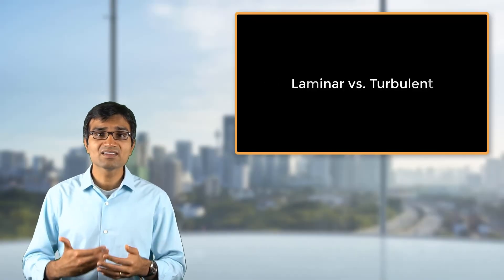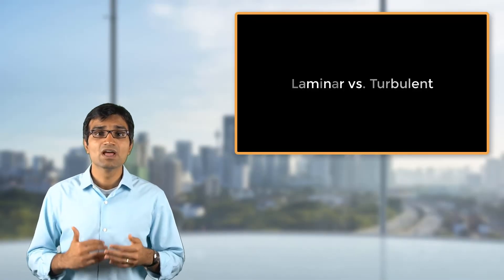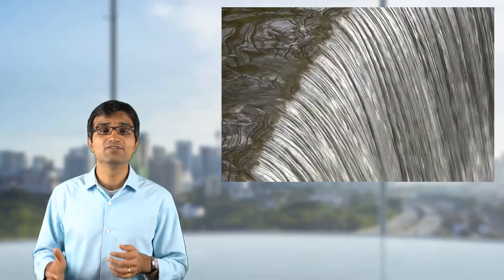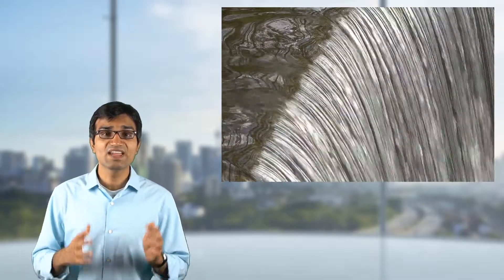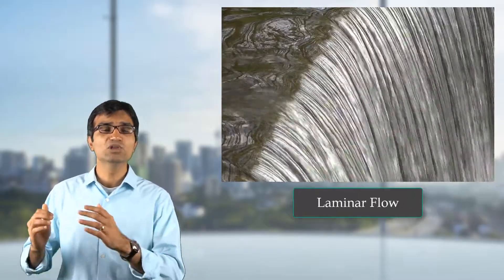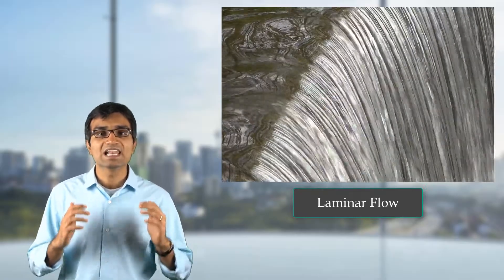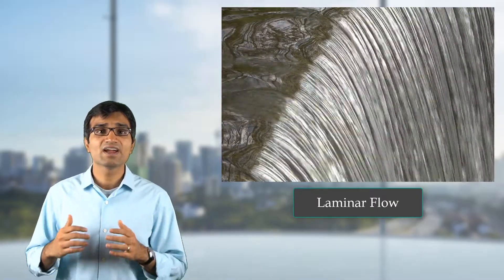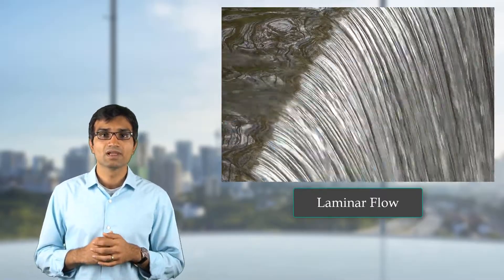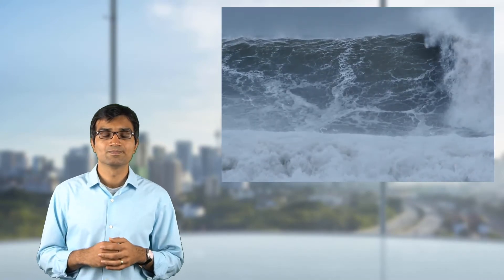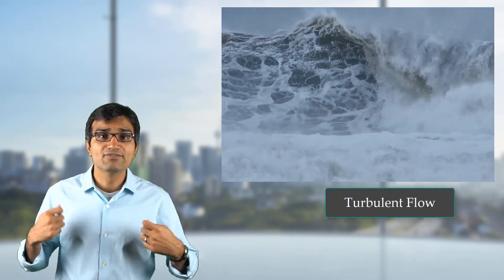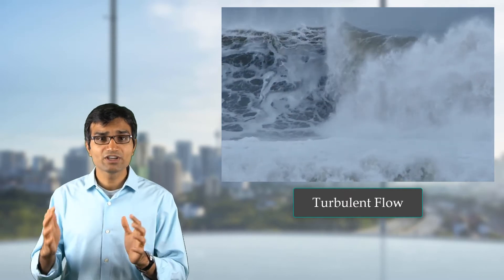Another important way to classify flows is to categorize them based on what the flow looks like. Really low speed flow resembles individual flow particles moving in a smooth, layered fashion, called laminar. Such flow speeds are classified as laminar flows. In laminar flows, there is no mixing within the fluid molecules. A turbulent flow, on the other hand, is characterized by flow mixing, random fluctuations, and chaotic motion.